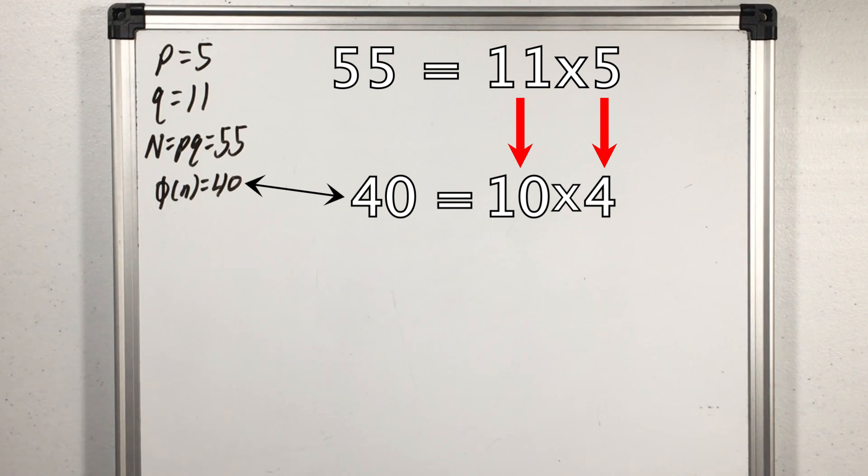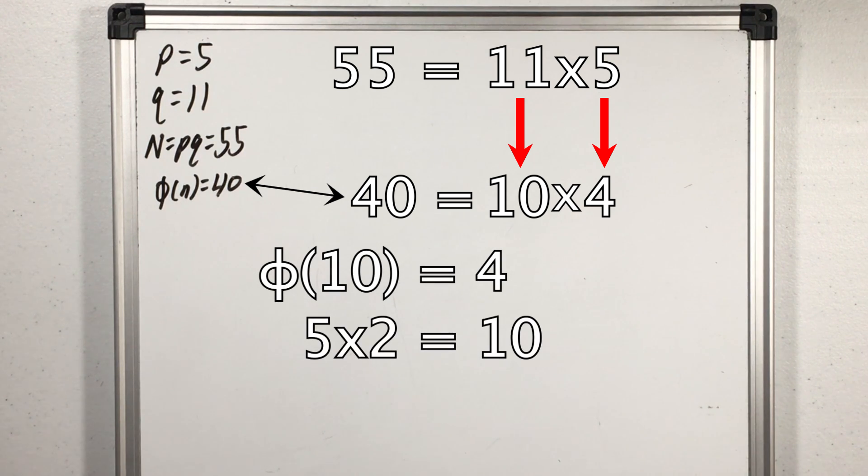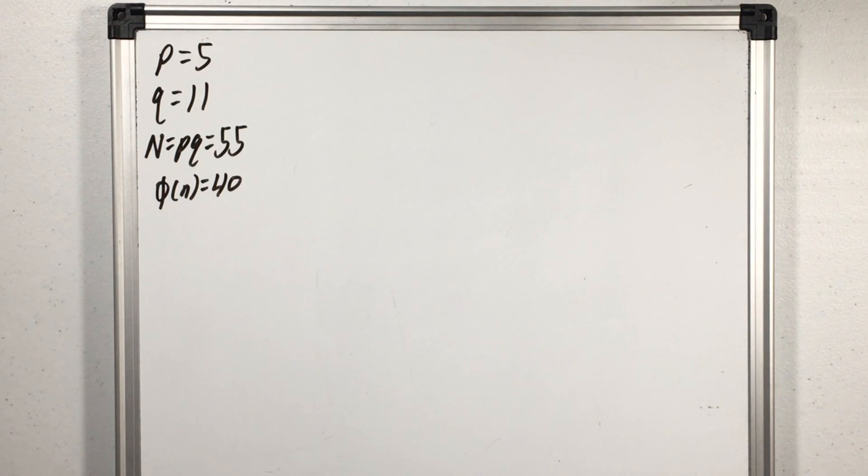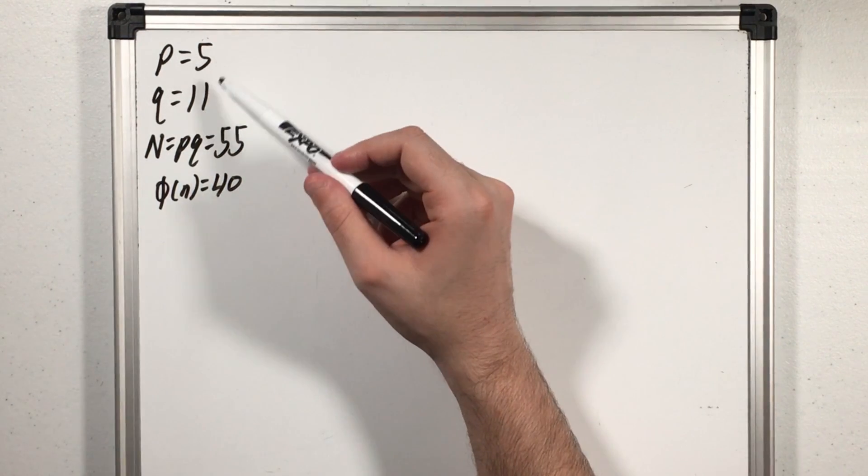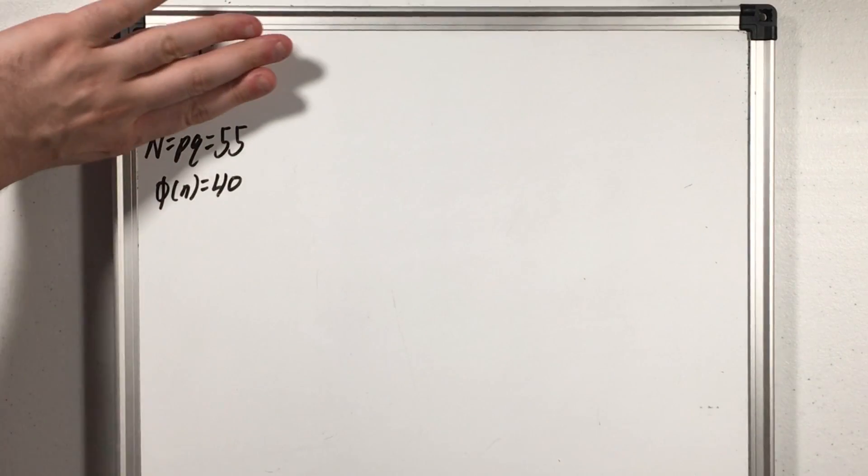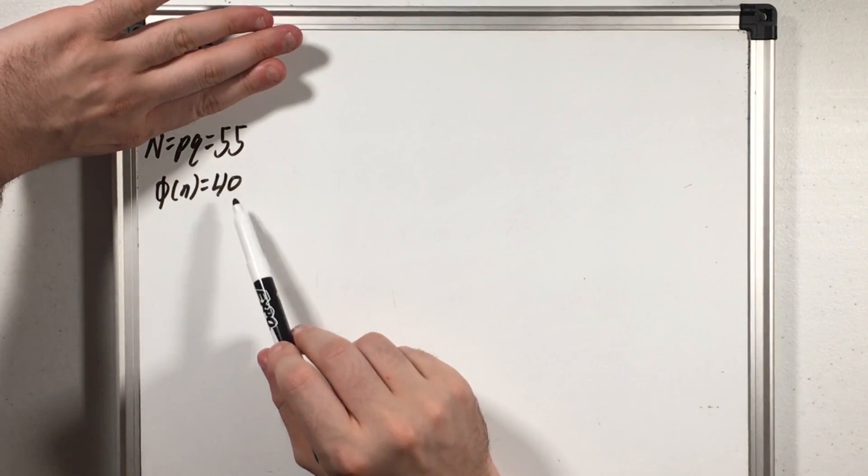Like I showed you earlier phi of 10 was 4. Well 10 is 5 times 2, subtract 1 from each of those and we get 4. Now notice something, it's really easy to find this when we know both the factors but if we don't and just know n it'd be very difficult to find phi of n.